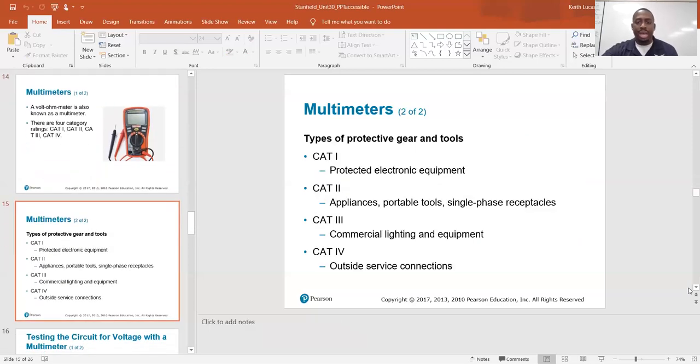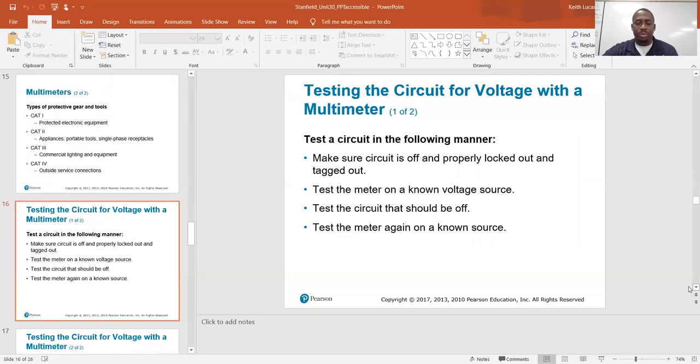Multimeters, types of protective gear and tools. Cat 1: protected electronic equipment. Cat 2: appliances, portable tools, single-phase receptacles. Cat 3: commercial lighting and equipment. Cat 4: outside service connections. So those are the different ratings.